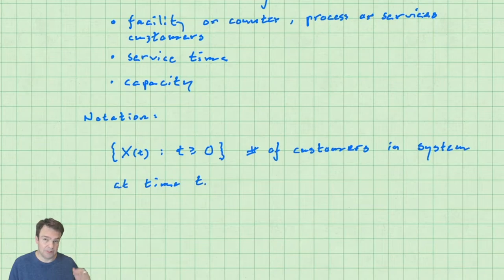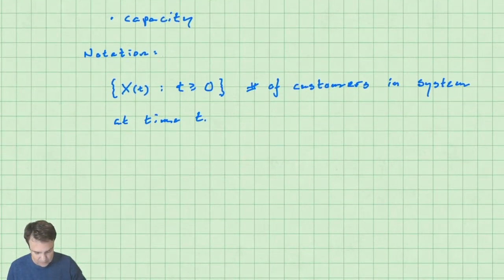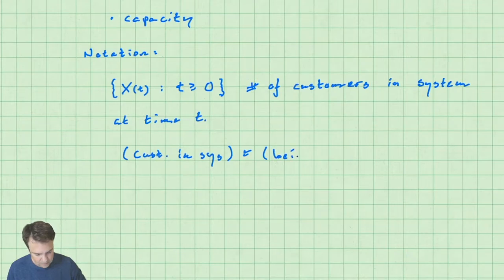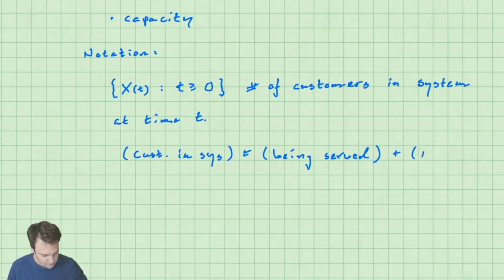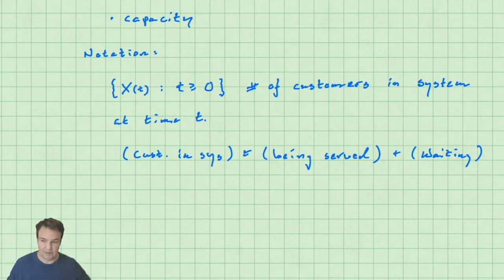Customers in the system consists of customers who are being served — in the airport example, the people actually at the desk speaking to the agents — plus customers who are waiting in the line or queue. When we say customers arrive, we mean they arrive to the queue, enter the waiting population, wait, and then eventually get served for some service time.